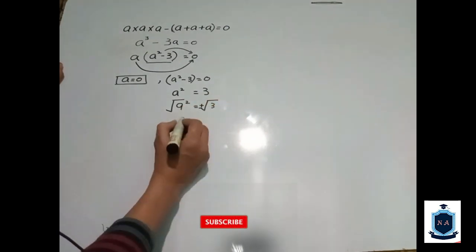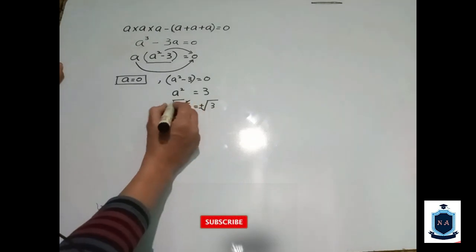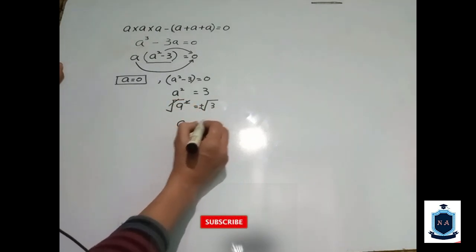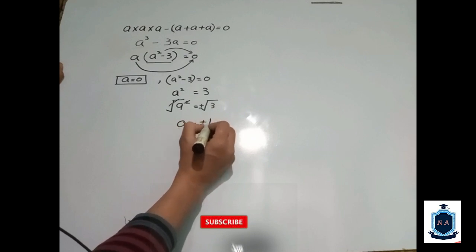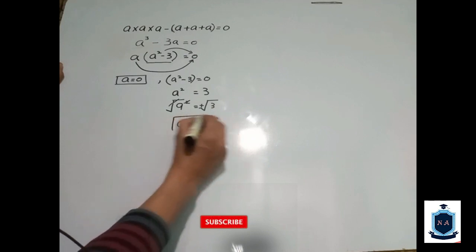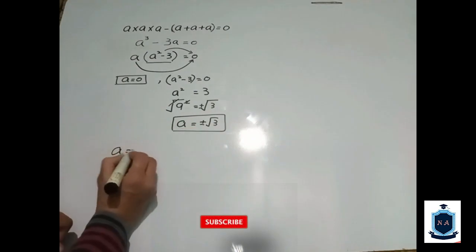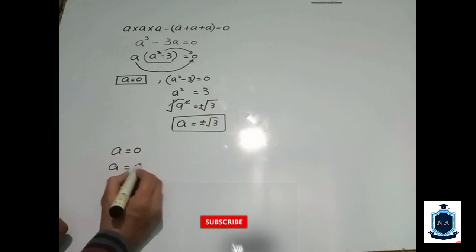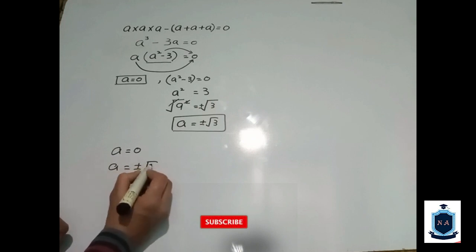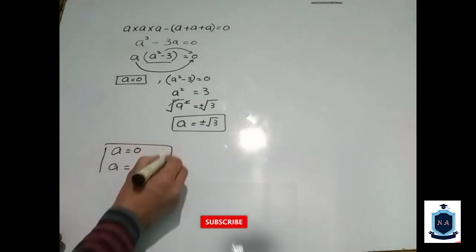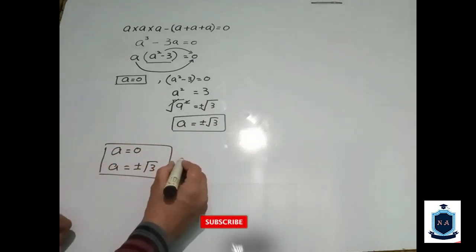The square root would cancel, and here you can see that a is equal to plus or minus under root three. So a equals plus or minus root three. That means there are three solutions in total.